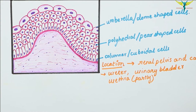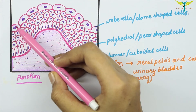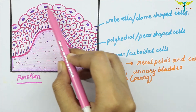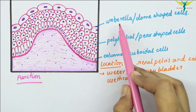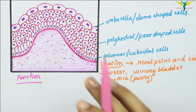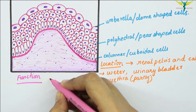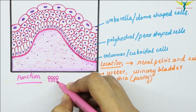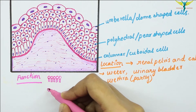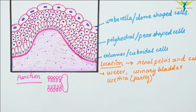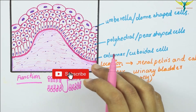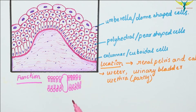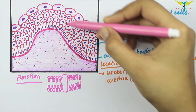Regarding the function of the transitional epithelium: the plasma membrane of the surface epithelium — lined by umbrella or dome-shaped cells — is unusual. Its structure is made up of a lipid bilayer in which special glycoproteins are embedded.